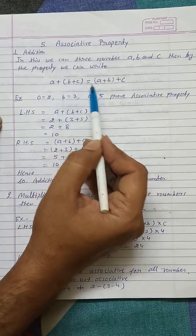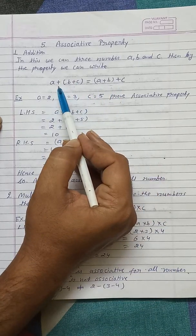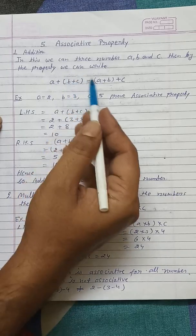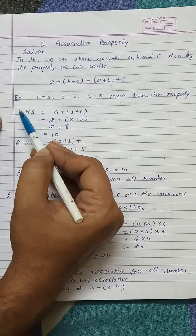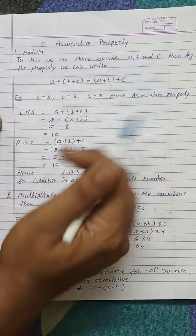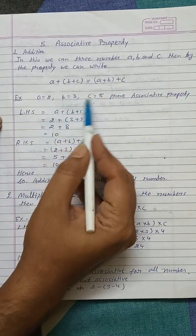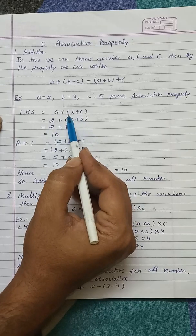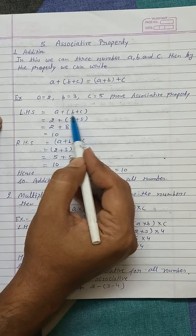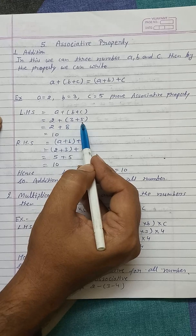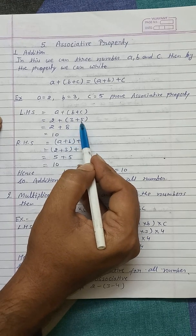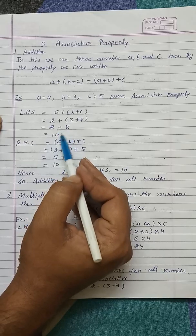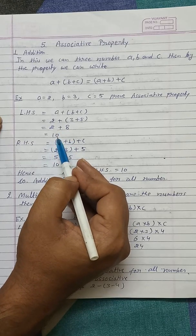Now we have two sides: right hand side and left hand side. We can prove using this property. So first take LHS. Now put the value of A, B and C. First of all by the rules of BODMAS first we solve this bracket. So 3 plus 5 equals 8 and then add 2. We find the answer finally 10.